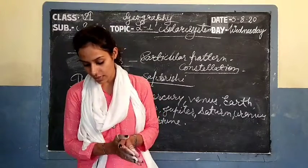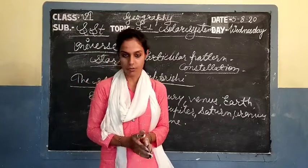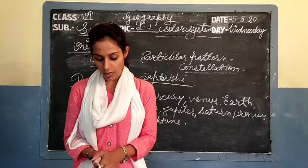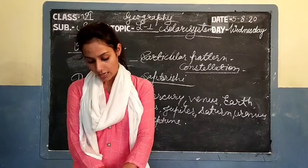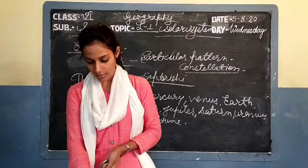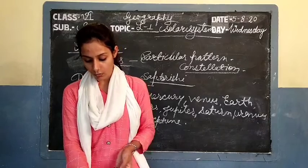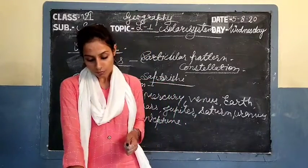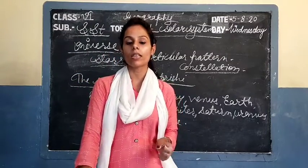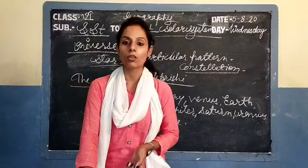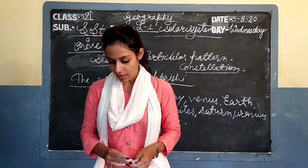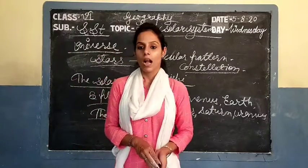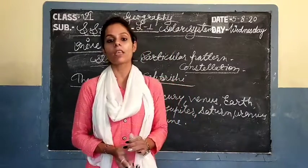The sun is made up of extremely hot gases and gives out a lot of heat and light. Our earth gets only a part of this energy. Without the sun's energy, our earth would become cold and lifeless. Sun ki energy ke bina hamare liye life possible nahi hai. It is the sun which sustains all life. That's why many ancient people regarded the sun as a god.